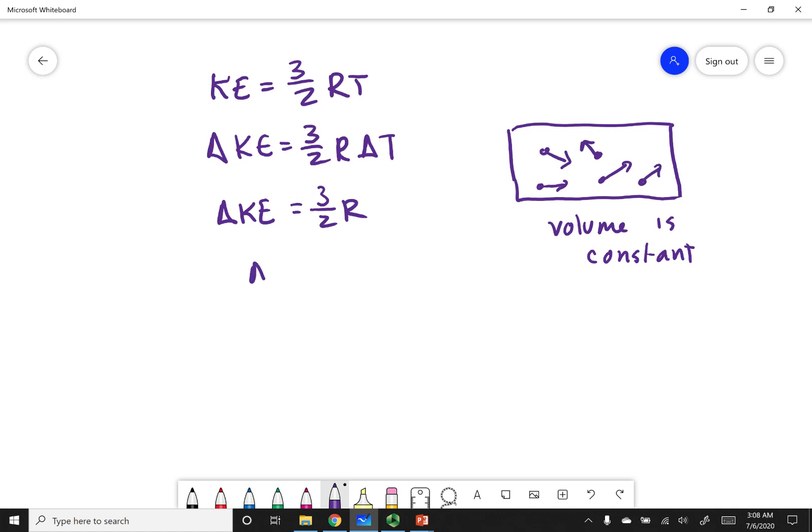So the change in my energy under constant volume is just going to be 3 halves R. This is the energy required to take one mole of a monoatomic ideal gas and raise its temperature by one degree Kelvin. This is our molar heat capacity. Molar heat capacity is abbreviated with a C, and my conditions where I have constant volume.